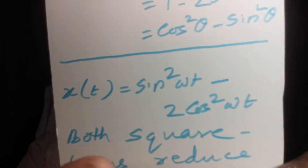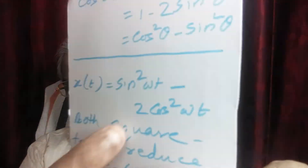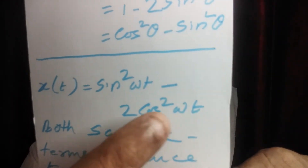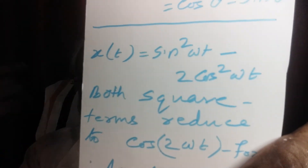The given equation is x(t) = sin²(ωt) − 2cos²(ωt). Both these terms are squared, so they can be transformed to a function containing 2ωt. That means the angular frequency of the vibration or simple harmonic motion is 2ω — double the value of ω. That's all.